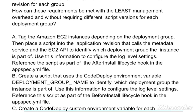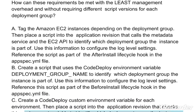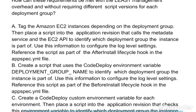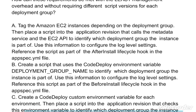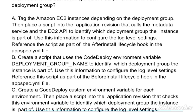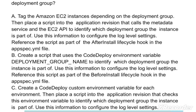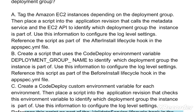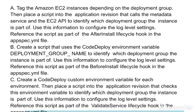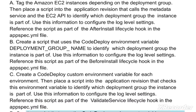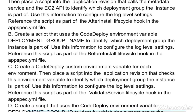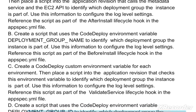Option B: Create a script that uses the CodeDeploy environment variable DEPLOYMENT_GROUP_NAME to identify which deployment group the instance is part of. Use this information to configure the log level settings. Reference this script as part of the BeforeInstall lifecycle hook in the appspec.yml file.